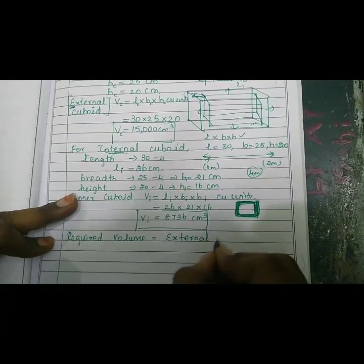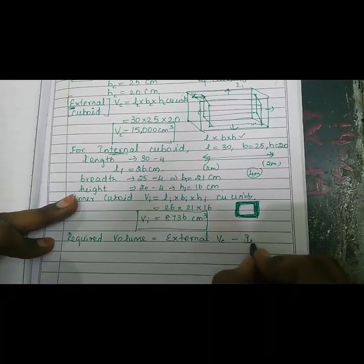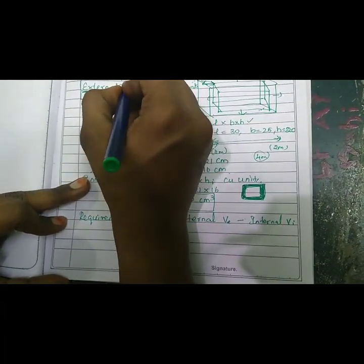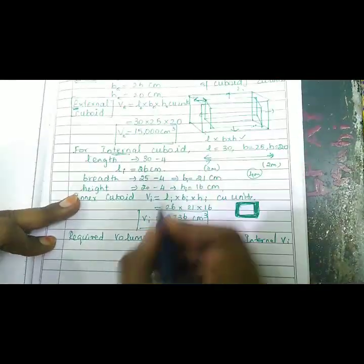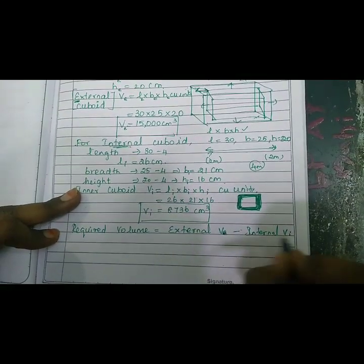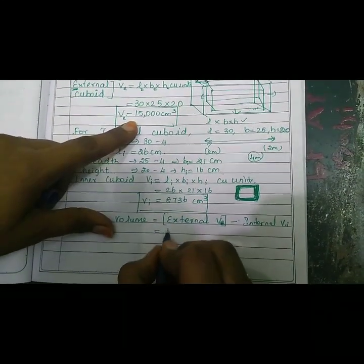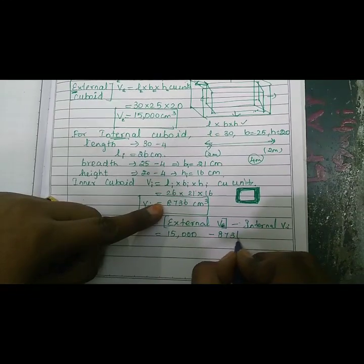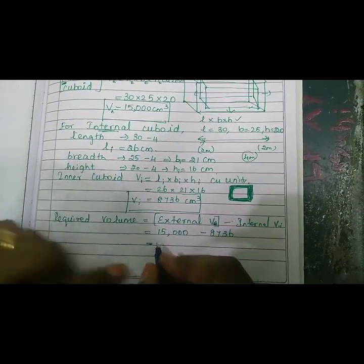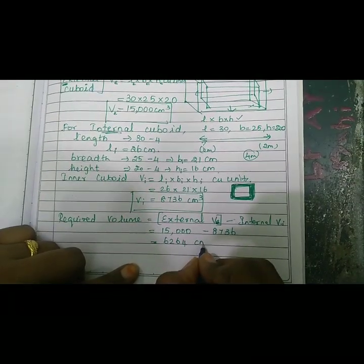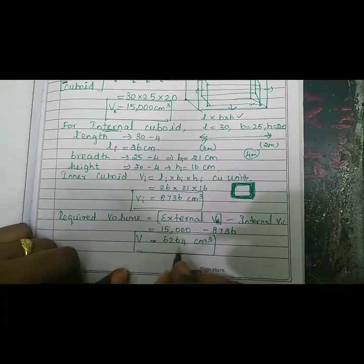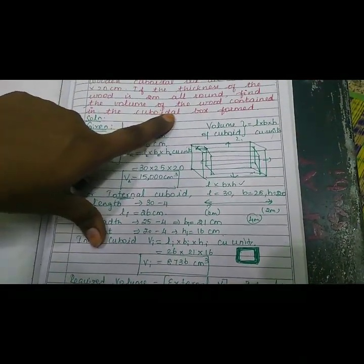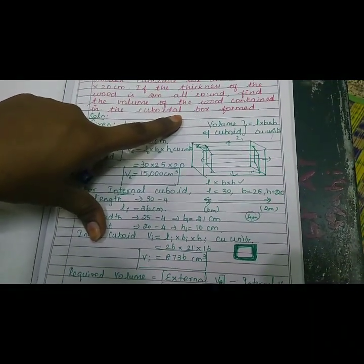Required volume equals external volume (Ve) minus internal volume (Vi). External volume is 15,000 cm³. So 15,000 minus internal value 8,736 gives us 6,264 cm³. Volume of the wood contained in the cuboidal box is 6,264 cm³.